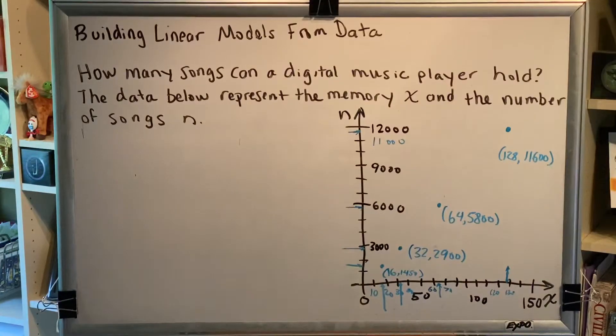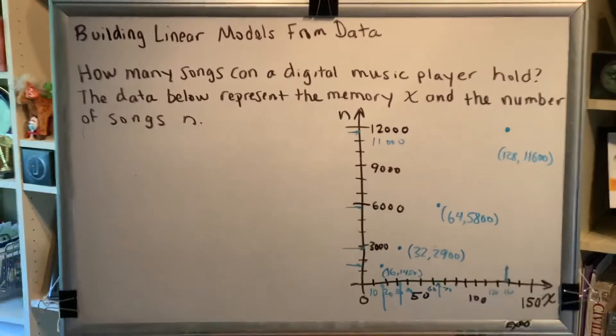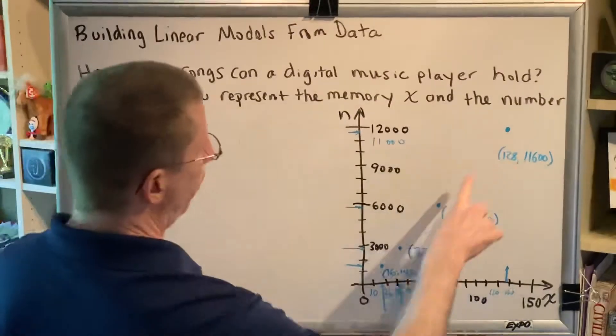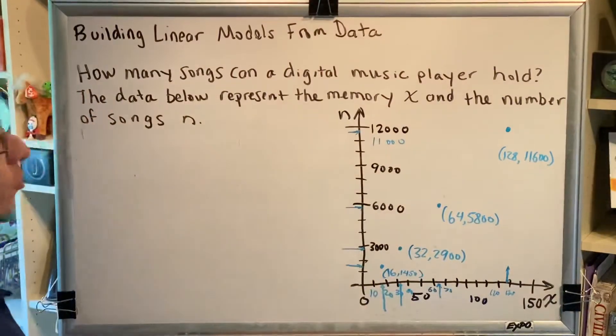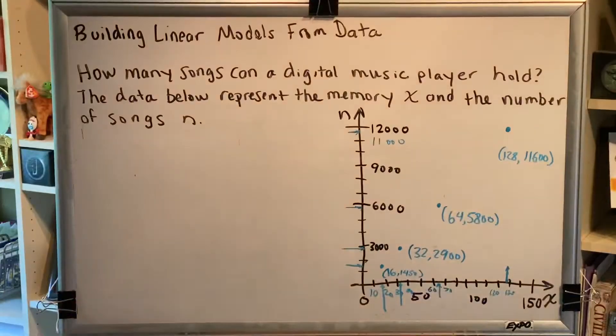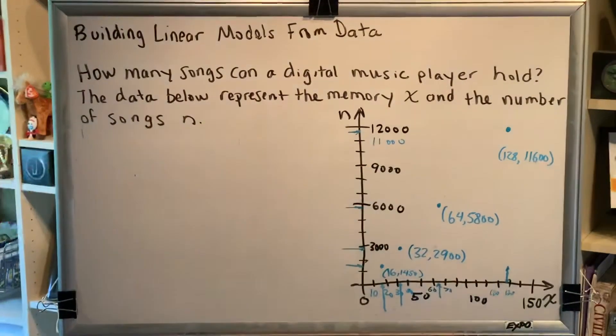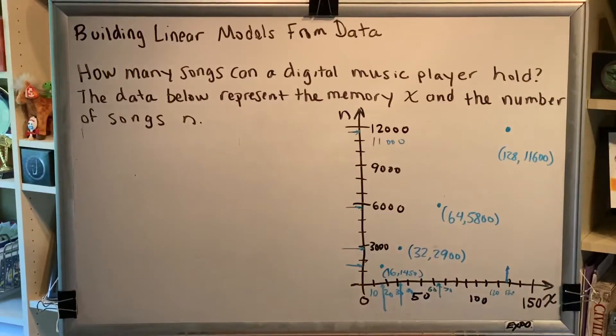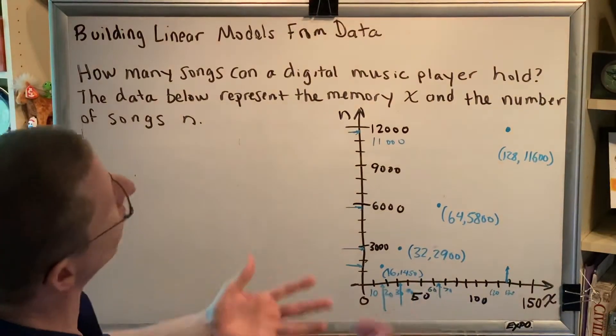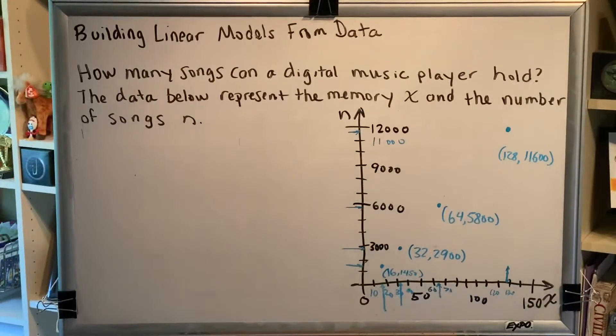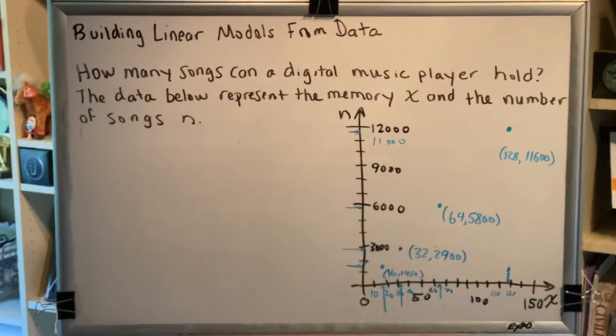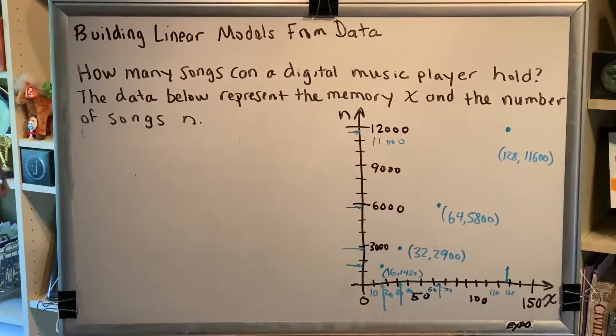And here we go, Part C. Determine the linear function that describes the relationship between x and n. We proved in Part B that all of these dots here form a straight line. So if somebody asks you to determine the linear function, what they're asking for is an equation of the line that goes through all of those dots. And that's pretty easy to find. Just pick two of these four points and use the point slope formula to write the equation of the line.